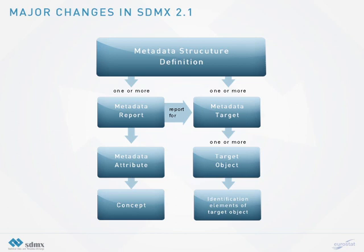With the SDMX 2.1 release of the standards, some changes were introduced. Using more meaningful terms, the full target identifier and partial target identifier are replaced by the single metadata target. The related identifier component is renamed target reference, containing the identification elements of a target object. Another important change is that in version 2.1, the target object to which metadata can be attached is not limited to simple objects such as a code or a category, but may be better identified at any level. Furthermore, it is even possible to specify a URL as the identification mechanism, and a metadata report can also be specified as XHTML.